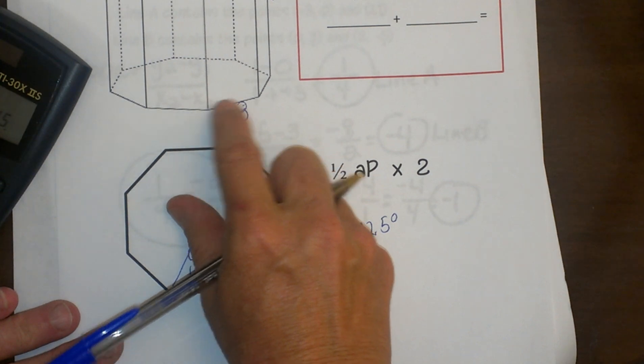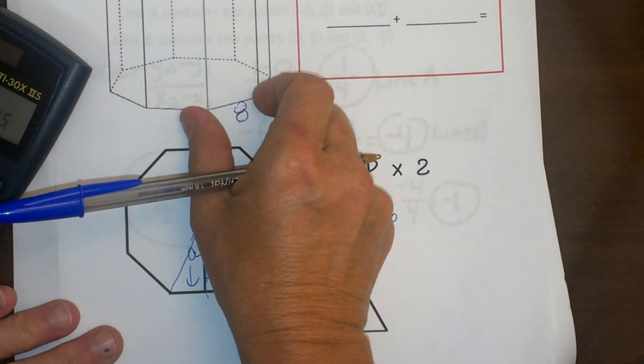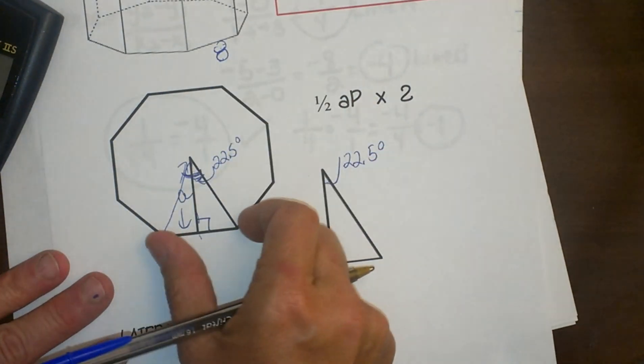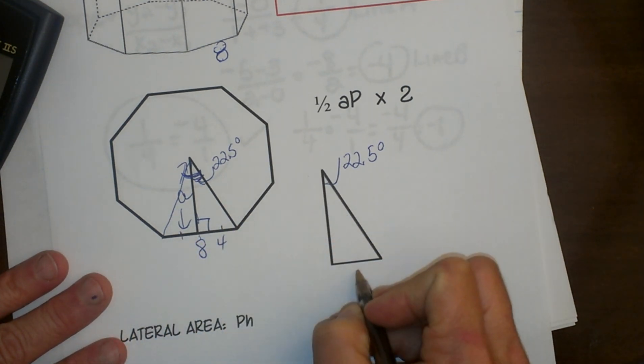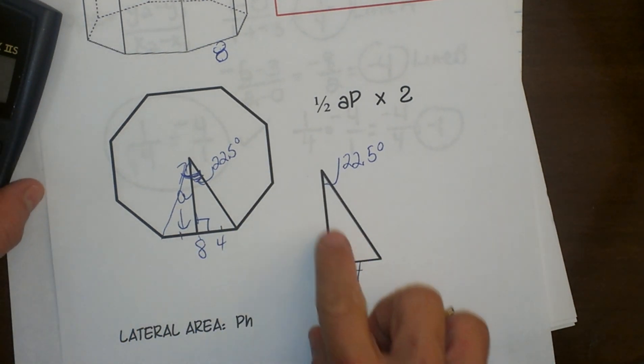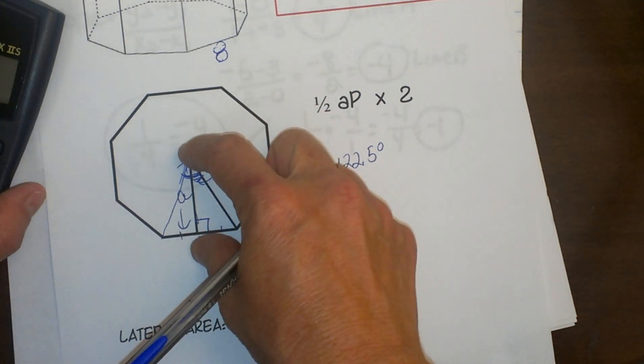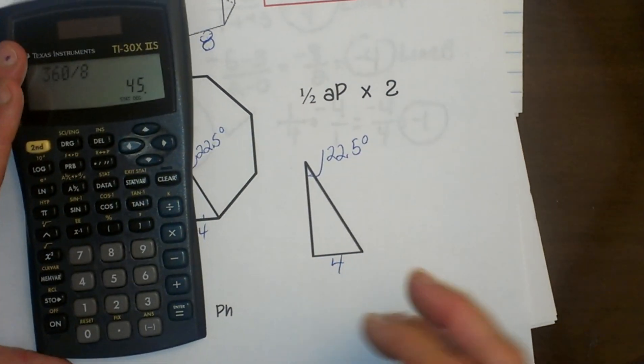What do we know? Well, we know the side of the octagonal prism is 8, so that means this side right here is 8, but I've cut it in half, so I'm going to use 4 for the base of my triangle. Now I need to know this side because that's my apothem. How do I do that? I have to use trig.